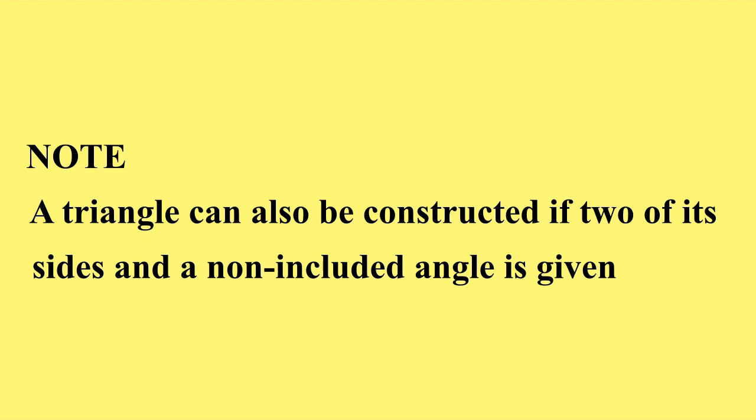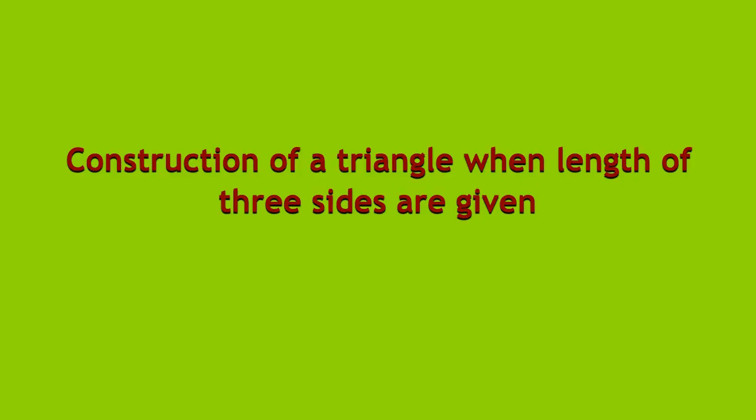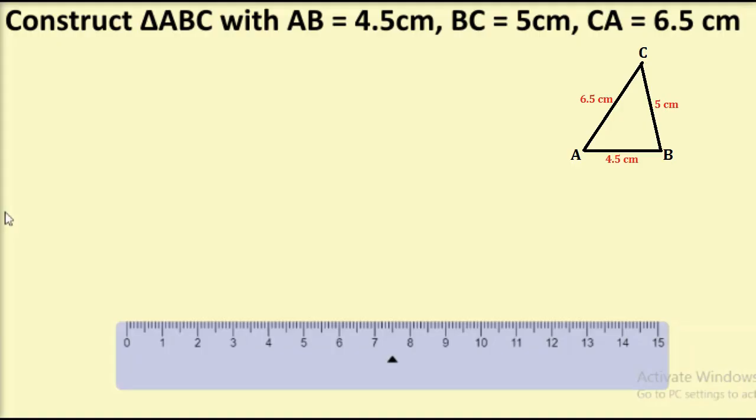Let us start our first construction — construction of a triangle when the measurements of three sides are given. We take the example: construct triangle ABC with AB equal to 4.5 cm, BC equal to 5 cm, and CA equal to 6.5 cm. First, you need to draw a rough figure before the actual construction — this is compulsory for all constructions.